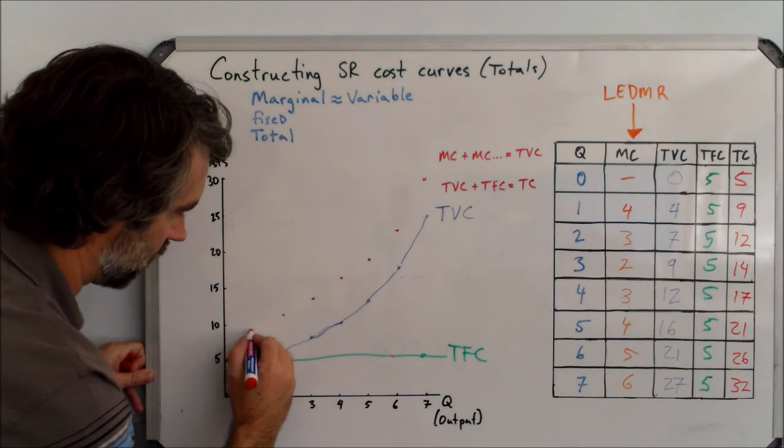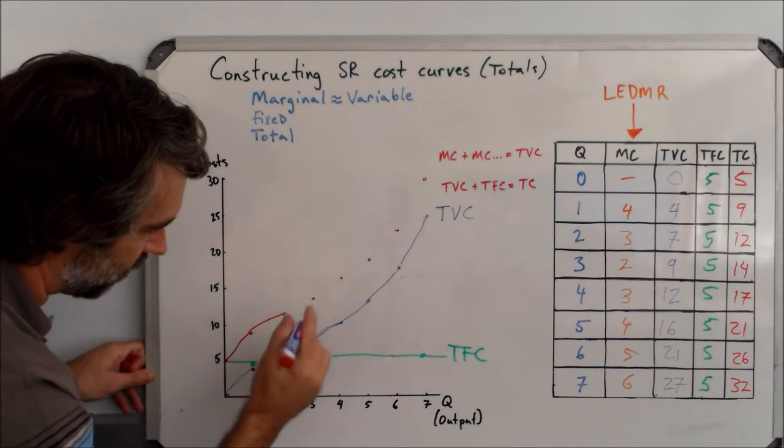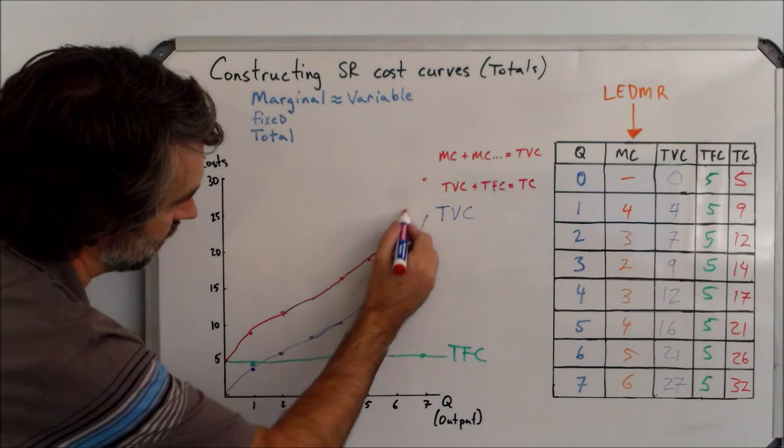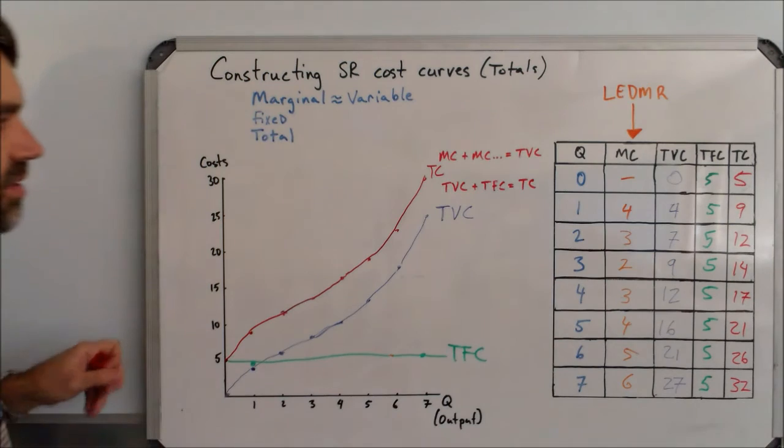So our total cost curve has the same thing. It gets flatter and flatter until the same point, where now it's becoming steeper and steeper and steeper. So that's total cost there.